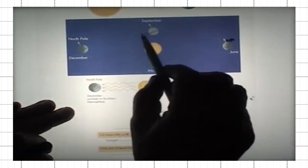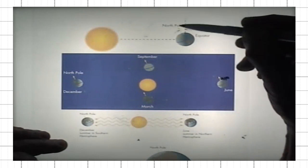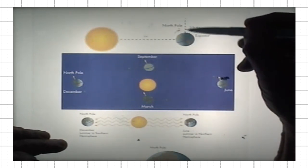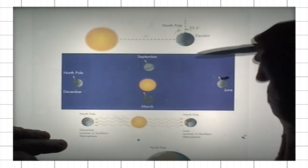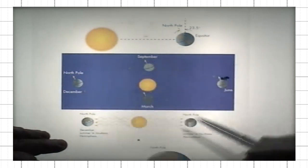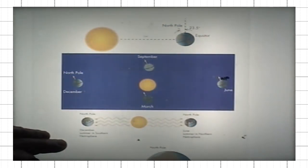If there was no tilt of the Earth's rotational axis relative to the vertical on the Earth's orbital plane, we would have no seasons.